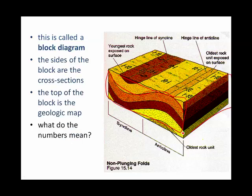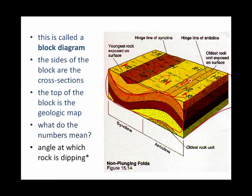The top of the block diagram is called a geologic map. On that geologic map, we can put symbols that have little numbers, and those numbers are telling you the dip. Here we have our syncline — here's the axis of the fold where it changes direction. It's dipping toward the axis on the syncline, but on the anticline it's dipping away from the axis. From the side view, we can tell that the youngest rock layer is the dark brown at the surface, and the oldest rock layer is the orange.